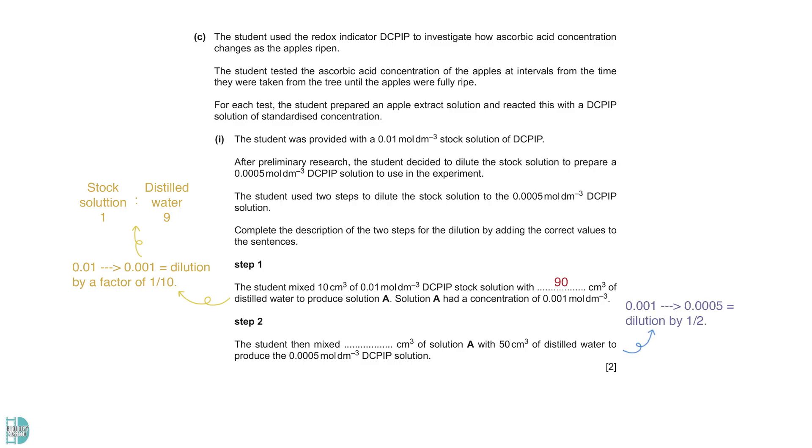Step 2 is a dilution by half. You have to add an equal volume of the original solution and distilled water. In our case, we add 50 cm³ of distilled water and 50 cm³ of the stock solution.